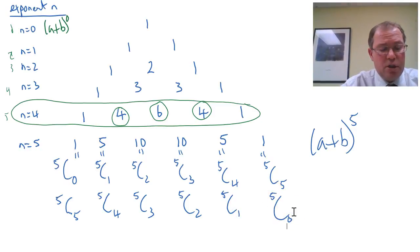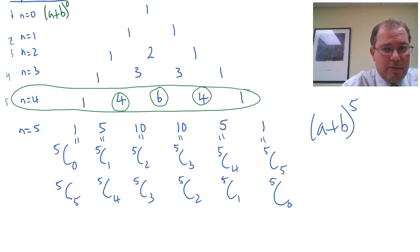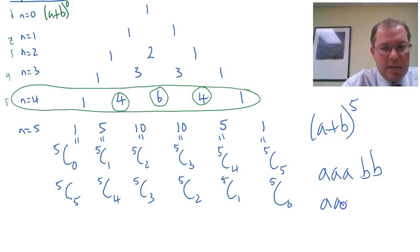And, of course, that comes about because you only have a and b. So, of course, if you have 3 a's and 2 b's, that's the same way of arranging 2 a's and 3 b's. There's the same number of ways.